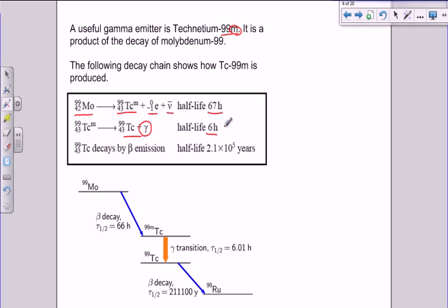So technetium-99m is what we call a metastable state, which we'll have a look at in a minute, and it decays to ordinary technetium-99 via gamma emission, and this is the one we want to have going on in the patient's body. Now, this has a half-life of 6 hours, so it's quite suitable for medical diagnosis because it's short enough for the doctor to make a diagnosis and for the isotope to get around the body, but it's not too long. So by the time damage starts being done to the patient, the isotope will have decayed away. So 6 hours is a good half-life for that.